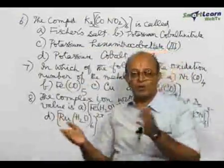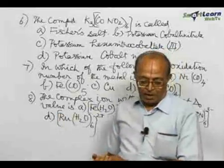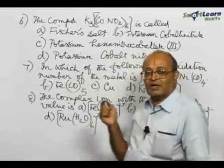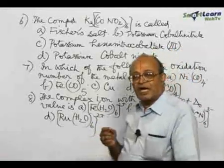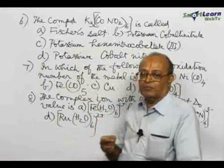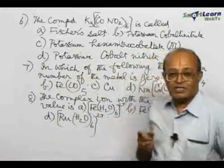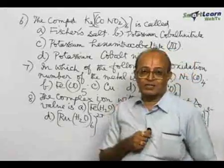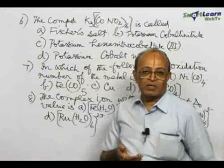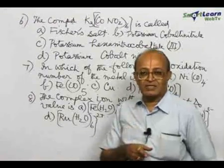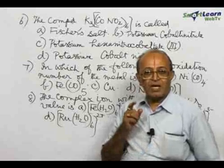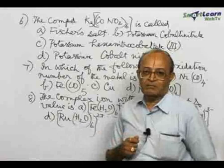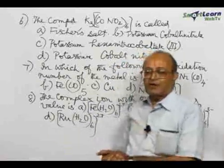You probably remember the rules governing the nomenclature. If the complex ion is a cation, then the central metal will not have a special name. But if the complex ion is an anion, then according to IUPAC nomenclature, the name should end in '-ate'.